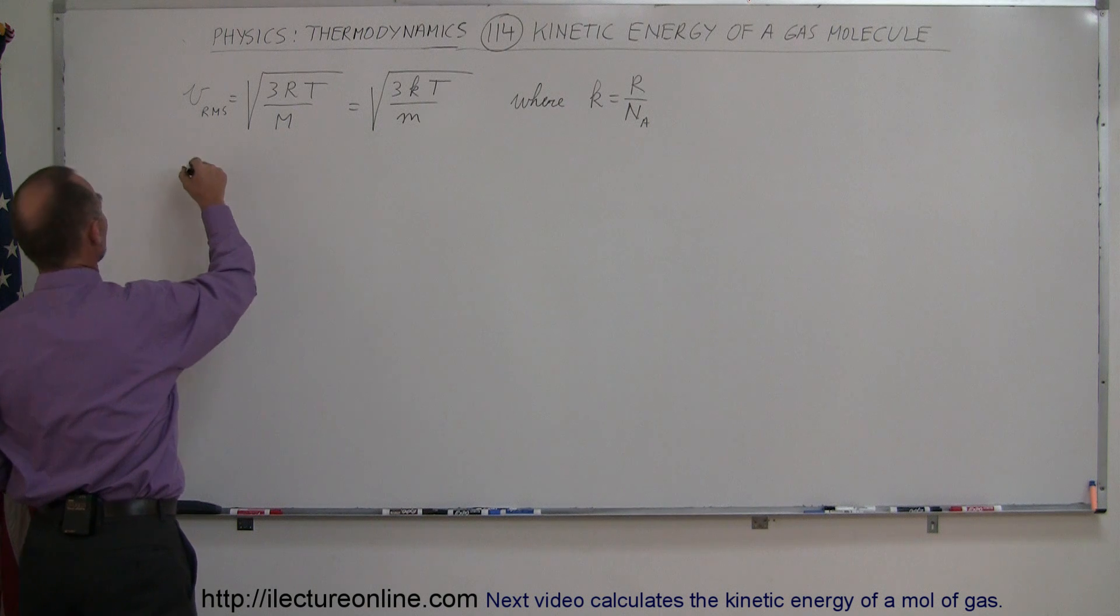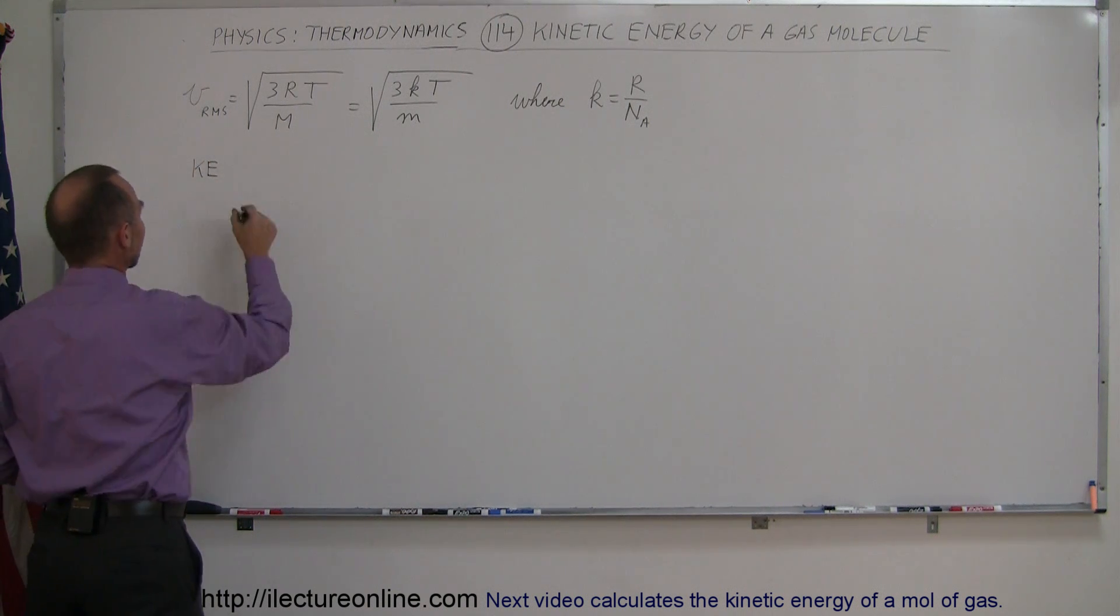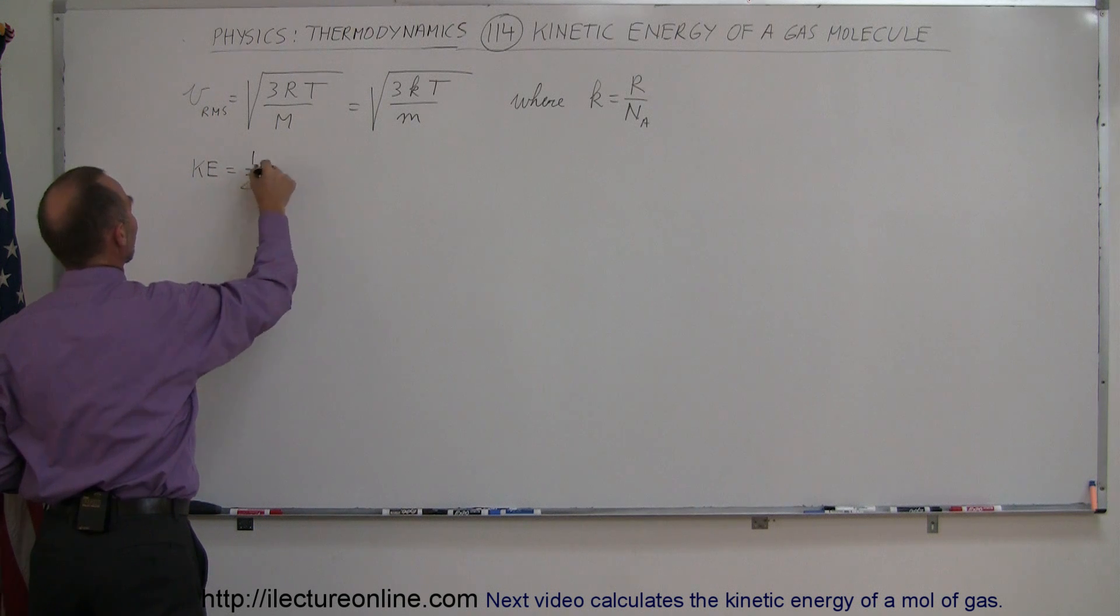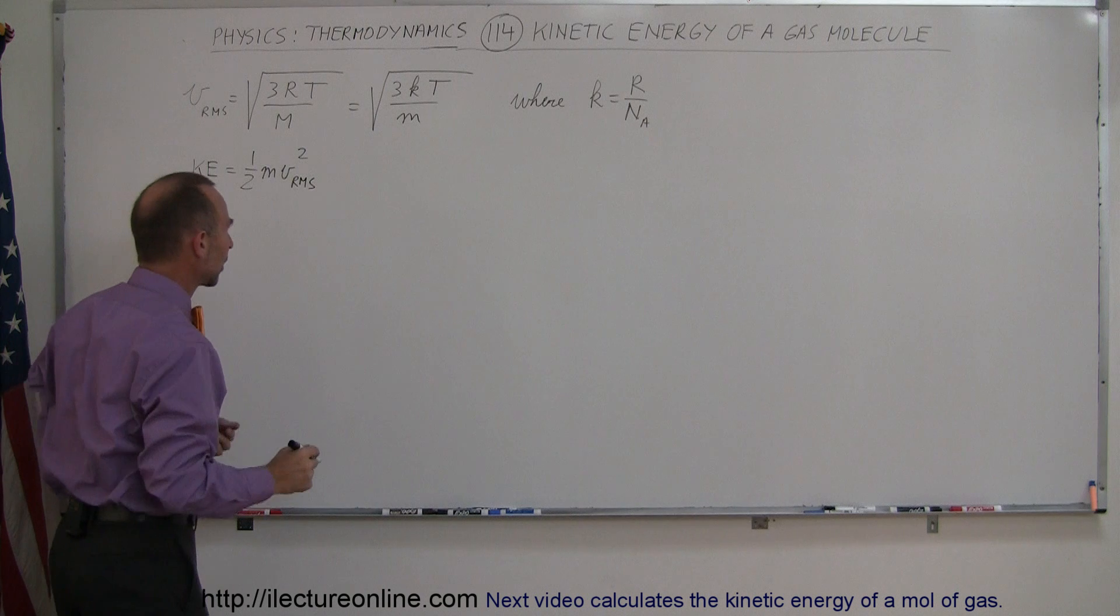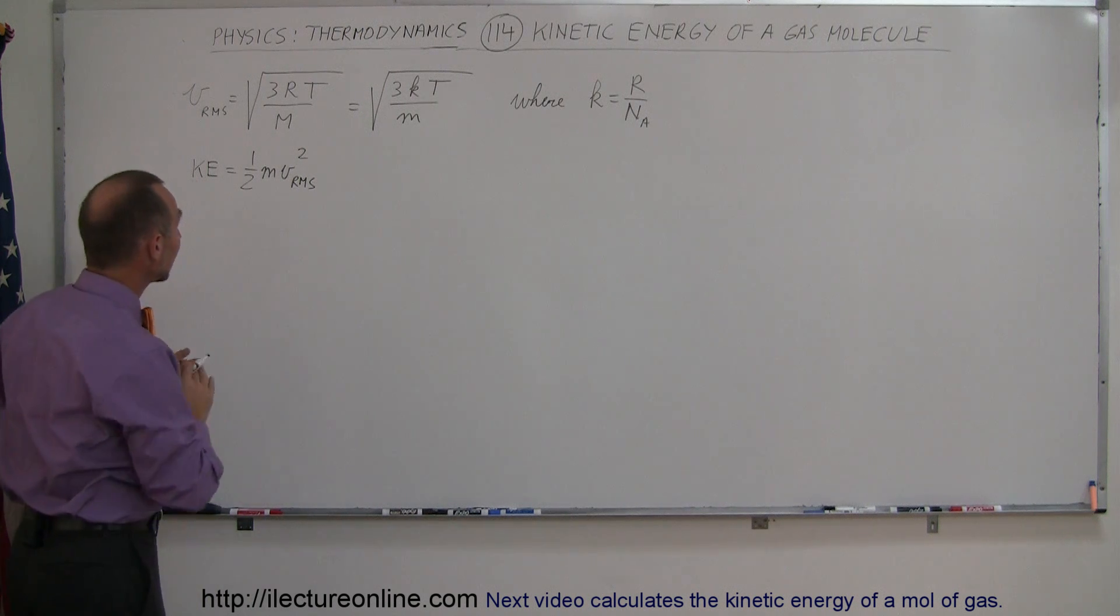So if we now also realize that the kinetic energy, and I like to use KE for kinetic energy, is equal to one-half the mass times velocity squared, and of course we're going to talk about the root mean square velocity, then how does that relate?